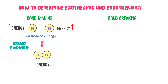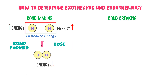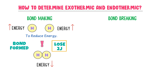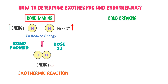Where does the extra heat energy go? The answer is simple — the extra heat energy goes to the surrounding. For example, these two hydrogen atoms lose two joules of heat energy to the surrounding. So in this whole process, a bond is formed between two hydrogen atoms and energy is lost to the surrounding. This is an exothermic chemical reaction. Therefore, remember that whenever bond making occurs, it will always be an exothermic reaction.